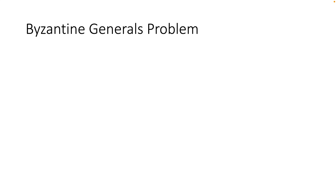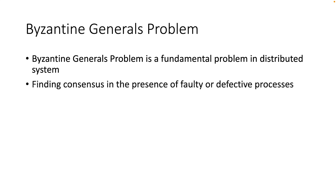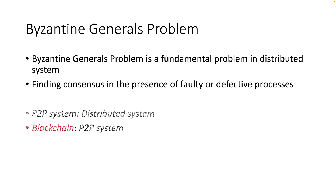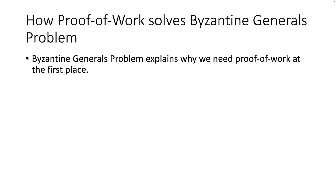The Byzantine Generals Problem is a fundamental problem in distributed systems: finding consensus in the presence of faulty or defective processes. This problem exists in all distributed systems. Since the peer-to-peer system is a distributed system, blockchain as a peer-to-peer system must solve the Byzantine Generals Problem. That is why we need proof of work — a consensus mechanism to make the blockchain network trustworthy so that all nodes agree on a single history of transactions.